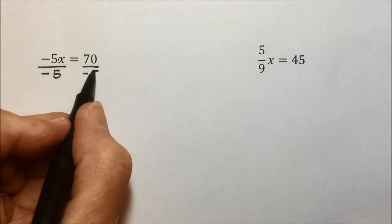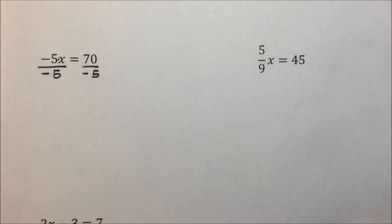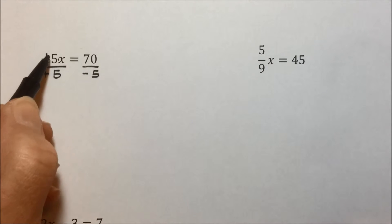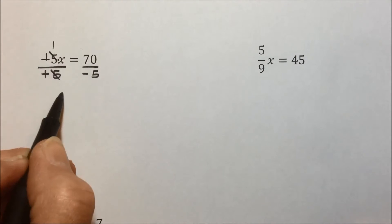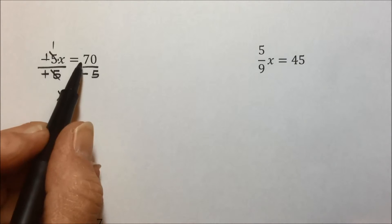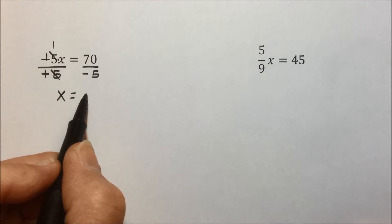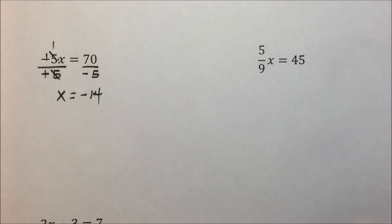What I do to one side, I need to do to the other side. A negative divided by a negative is positive. A 5 divided by 5 leaves a 1x, that's the goal always. Positive divided by a negative is a negative, and we end up with a 14.